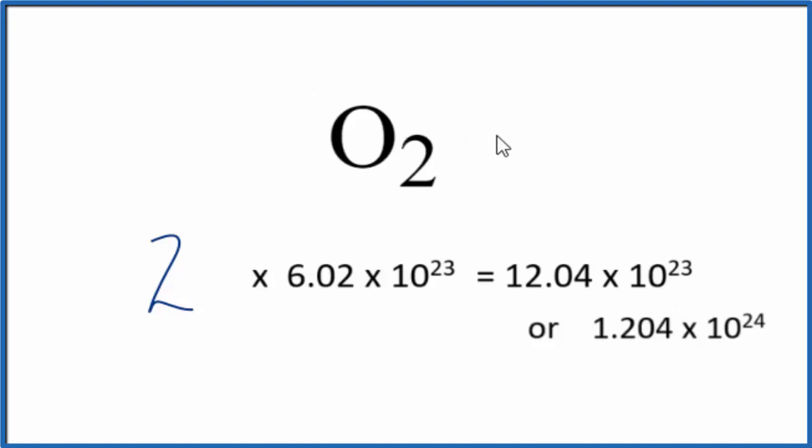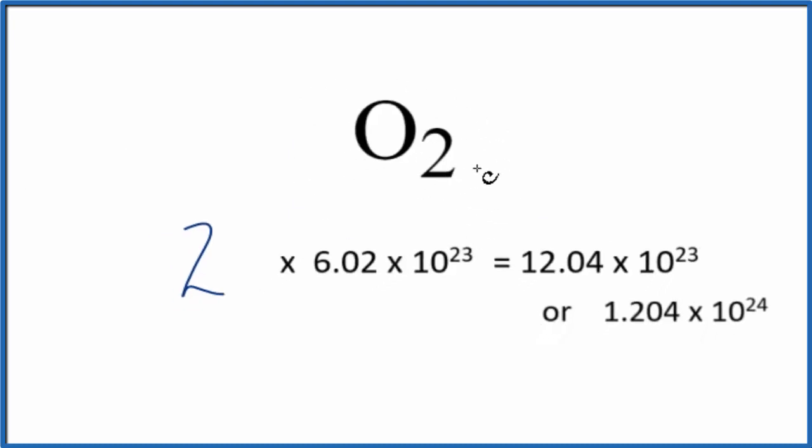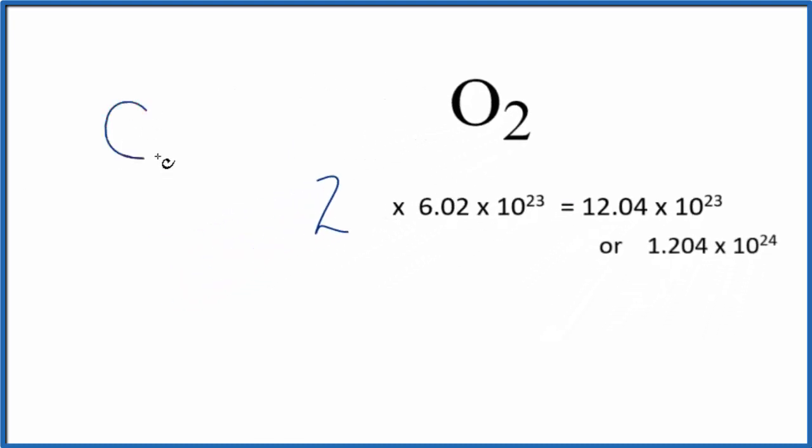Again, remember: it's going to be O2 if it's by itself. But if it's bonded to another element like carbon monoxide, you can have just one oxygen. Or in the carbonate ion, you could have three oxygens.